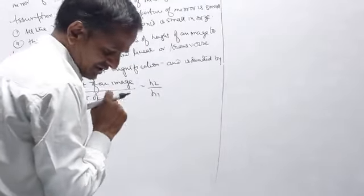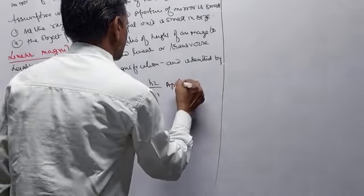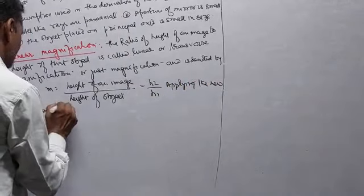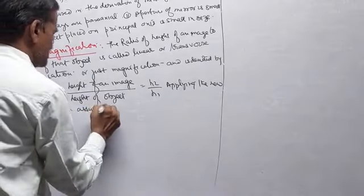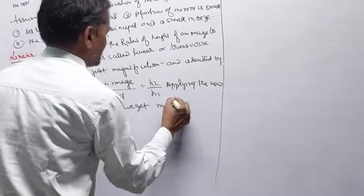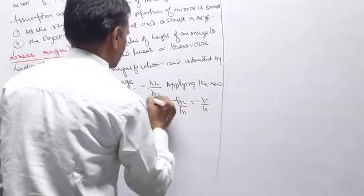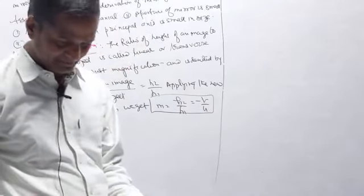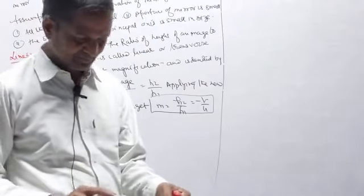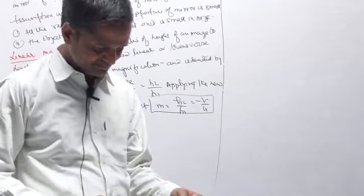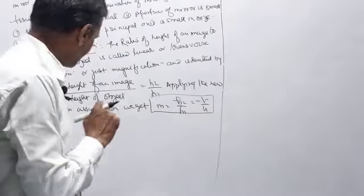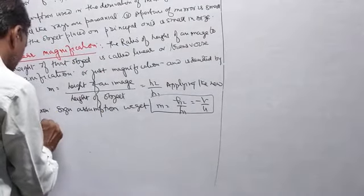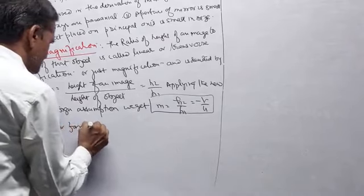Applying the new Cartesian sign convention, we get M equals -v/u.